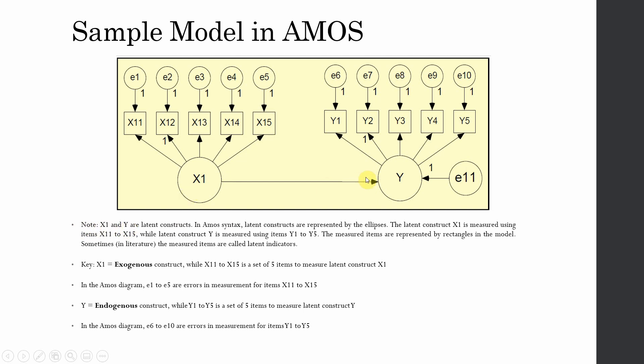Here we have an error term for unexplained variance in the dependent variable Y. Note X1 and Y are latent constructs. In AMOS syntax, latent constructs are represented by ellipses (oval or circle). The latent construct X1 is measured using items X11 to X15, whereas Y is represented by Y1 to Y5. The measured items are represented by rectangles or squares in this case.